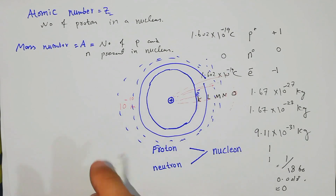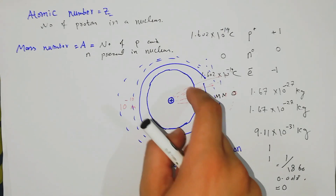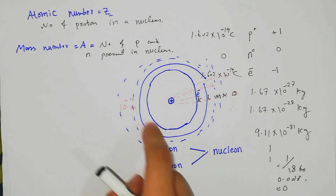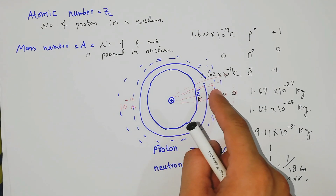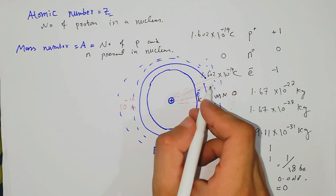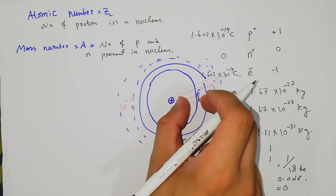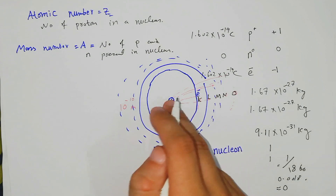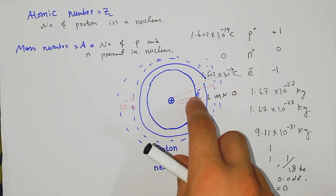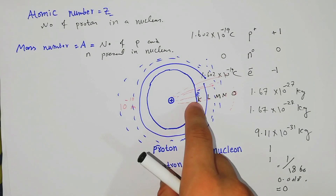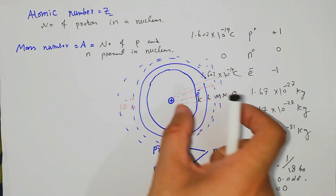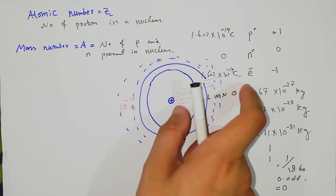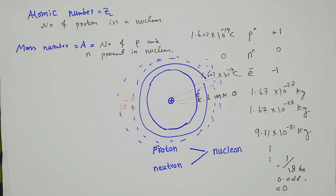According to the Bohr atomic model, when an electron revolves around the nucleus it does not emit or absorb energy, but when it jumps from a higher energy level to a lower one, or vice versa, energy is exchanged. The force of attraction depends on the number of energy levels — the K shell has the greatest force of attraction, and it decreases through L, M, N, and O respectively.